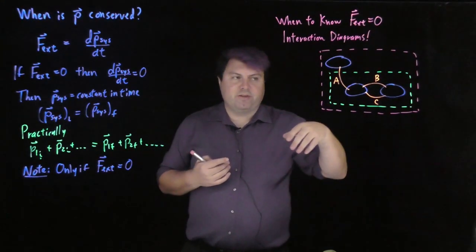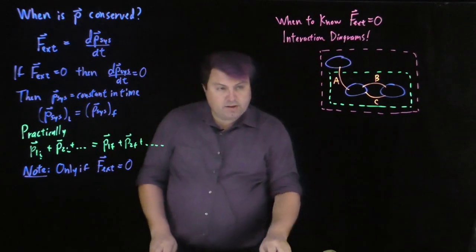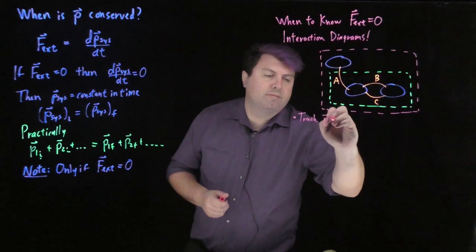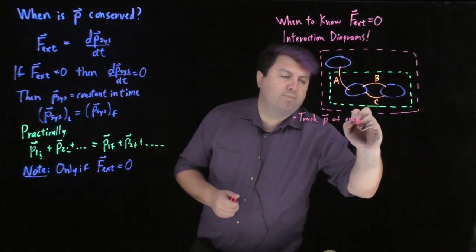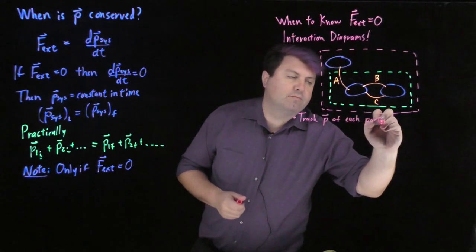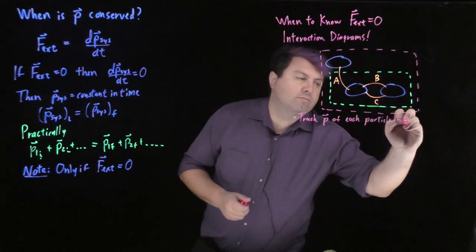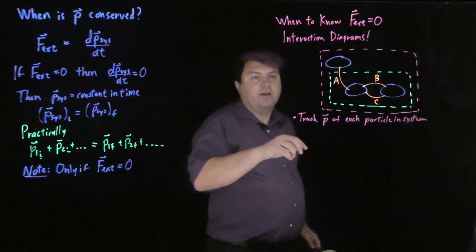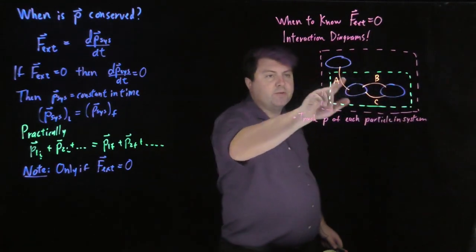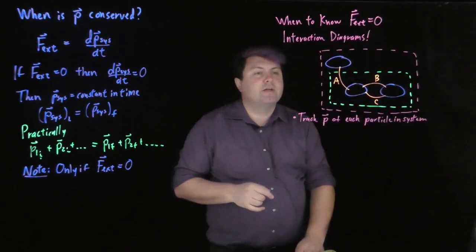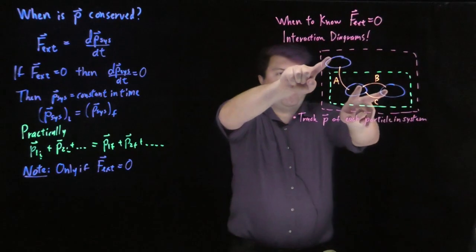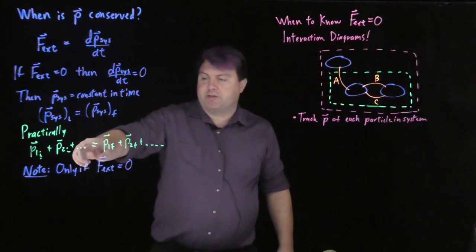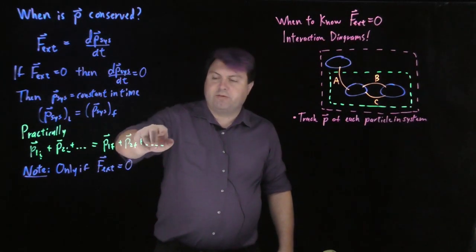The other thing to know with this is that we track the momentum of each particle in the system. So, for this smaller system, we would only track two particles, but for this larger system, we have to track three particles. So, p1i plus p2i plus p3i, p1f, p2f, p3f.